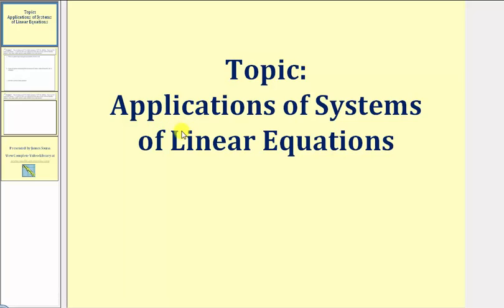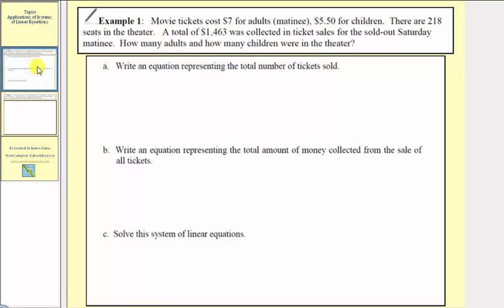Welcome to an example on how to solve an application problem using a system of linear equations. In this example, we're given that movie tickets cost seven dollars for adults and five dollars fifty cents for children. There are 218 seats in the theater, and a total of one thousand four hundred sixty three dollars was collected in ticket sales for the sold out Saturday matinee. How many adults and how many children were in the theater?